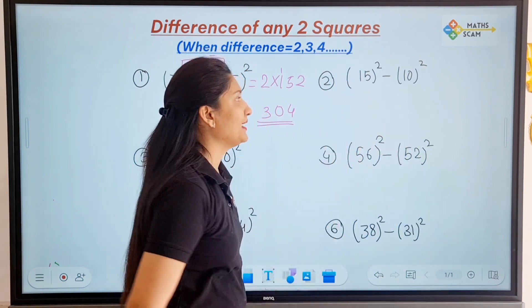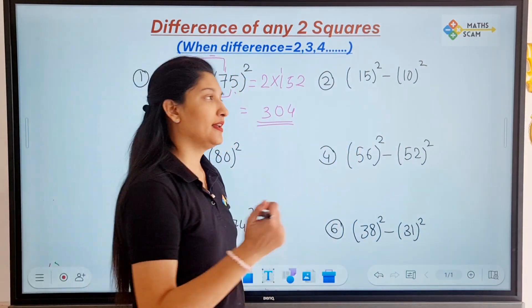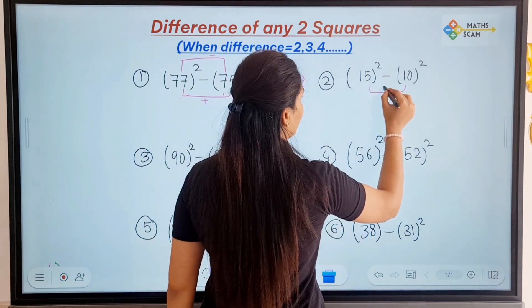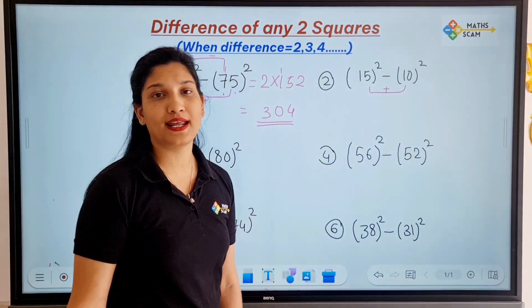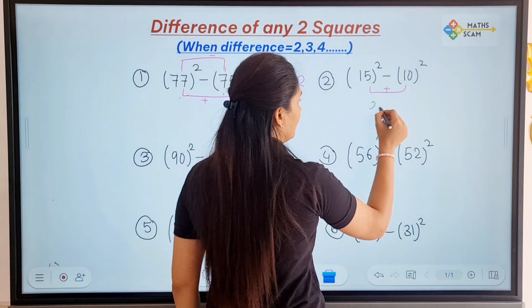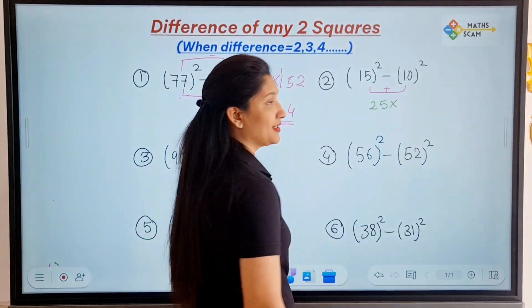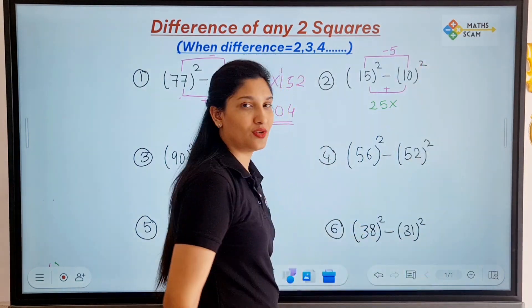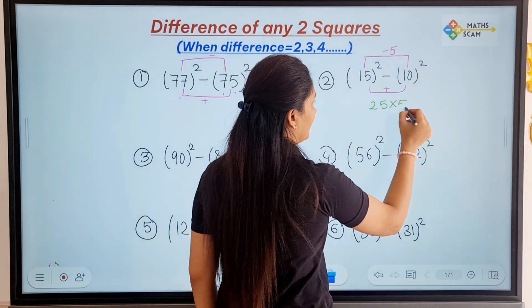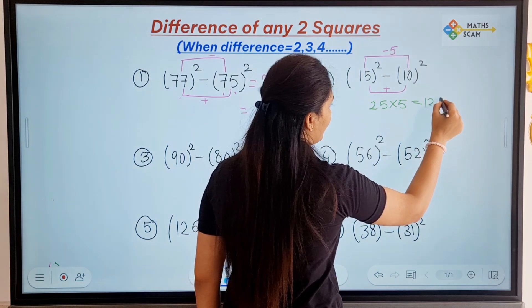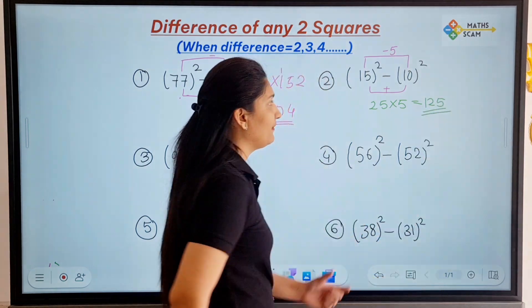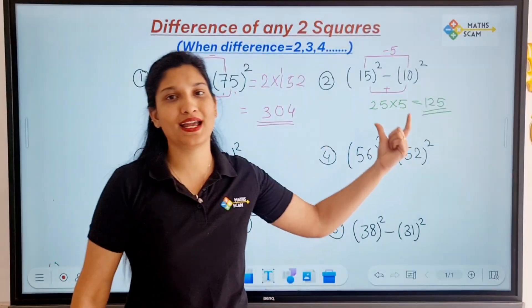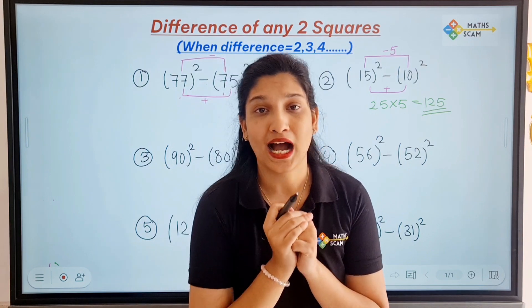Next one is 15 square minus 10 square. So first let's do the addition, 15 plus 10 is 25. Then let's do the subtraction, difference is 15 minus 10 is 5, so let's multiply it by 5. So 25 times 5 is 125, so the difference between square of 15 and square of 10 is equal to 125.